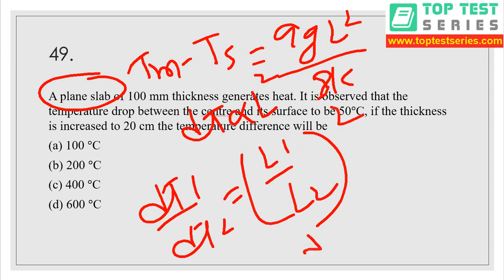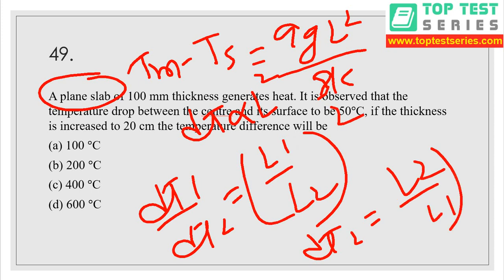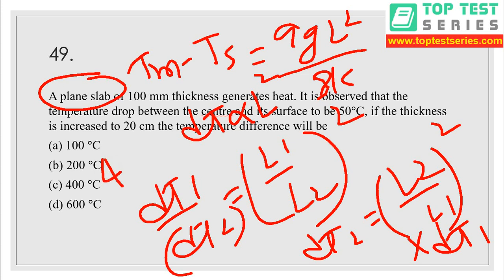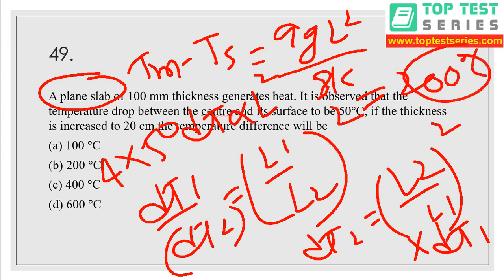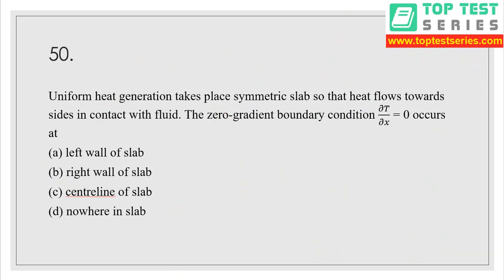Since heat generation and thermal conductivity remain the same, ΔT1/ΔT2 = (L1/L2)². So ΔT2 = (L2/L1)² × ΔT1 = (200/100)² × 50 = 4 × 50 = 200°C — therefore option B is the correct answer.